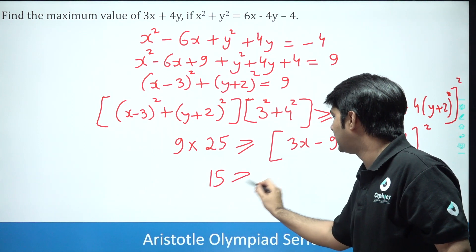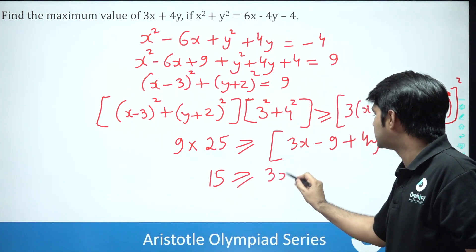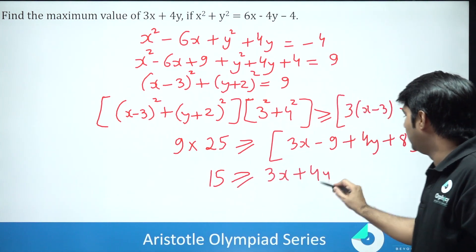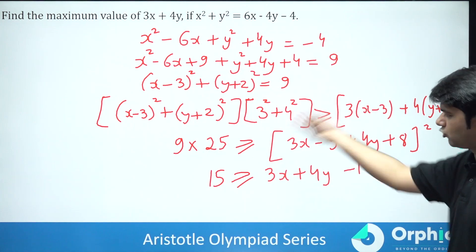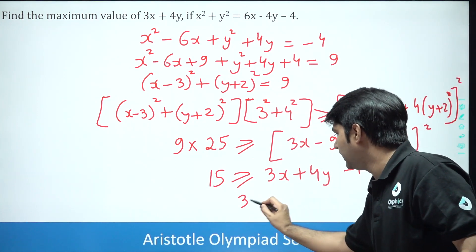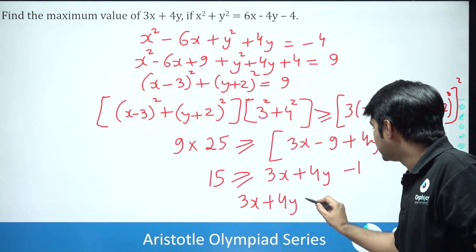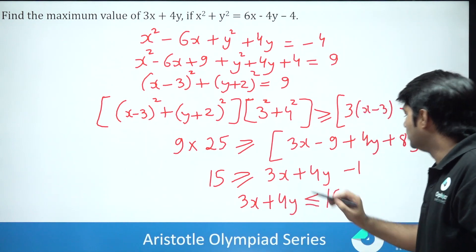This will become 9 into 25, so 225 is greater than or equal to 3x plus 4y and here we will get minus 1. Minus 1 is the whole square. So we will get 3x plus 4y is less than or equal to 16.